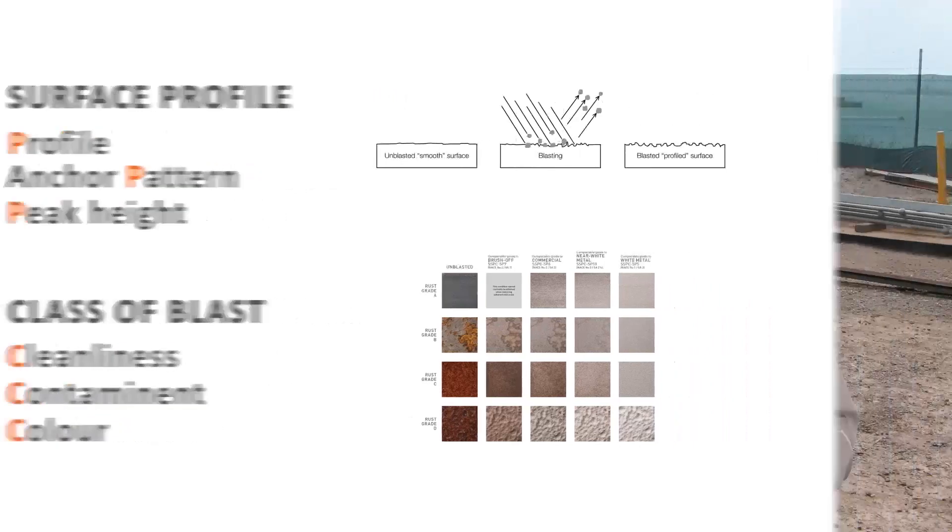Now both of these will often actually be specified when you're doing a high-spec project. It'll say you need so many microns or so many mils of surface profile, and you'll need a class of blast to a certain standard. So they're both important, they're both different, they both go together, but they need to be determined separately.